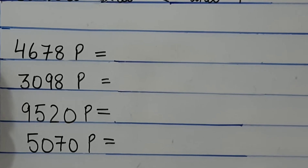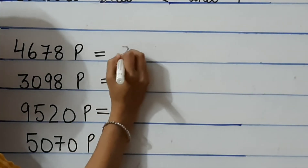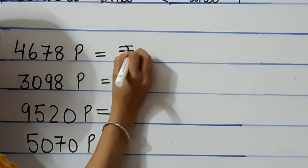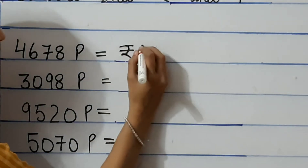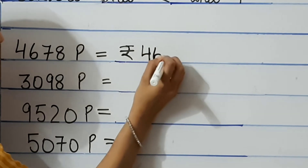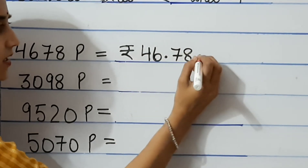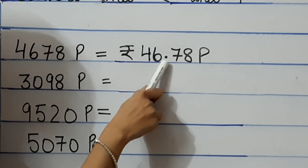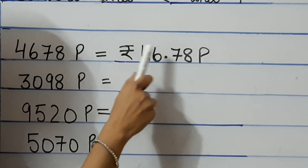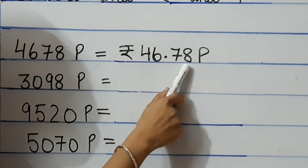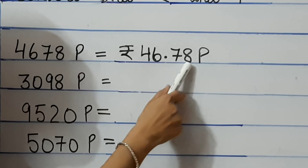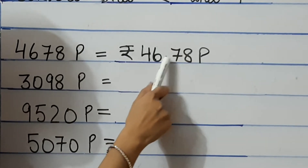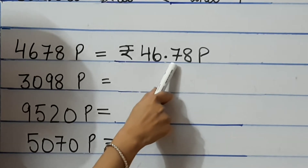Next, 4678 paise. We need to convert this into rupees and paise. We write it as ₹46.78 P. The dot represents the decimal sign and separates rupees from paise. You just have to put the dot sign before the last 2 digits to separate them.